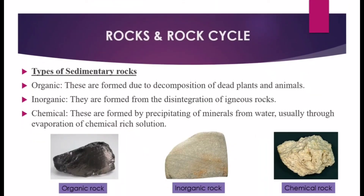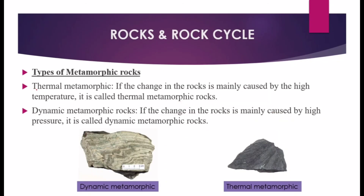There are three types of sedimentary rocks: organic, inorganic, and chemical. Organic rocks are formed by the decomposition of dead plants and animals. Inorganic rocks are formed from the disintegration of igneous rocks. Chemical sedimentary rocks are formed by the precipitation of minerals from water, usually through the operation of chemical-rich solutions.